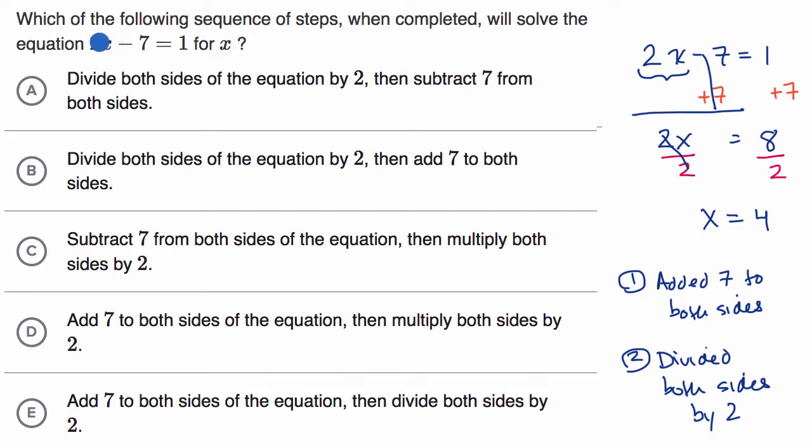We could even try it out with that. If you divided both sides by two first, if you divide the left-hand side by two, you would get 2x divided by two is x minus seven over two is equal to one-half when you divide the right side by two, and then you subtract seven from both sides. That's definitely not going to solve for x. Rule that out.